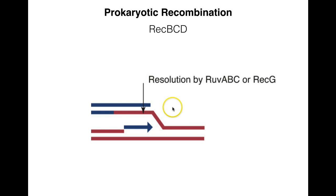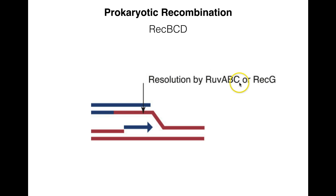The RUV proteins act on the Holliday junction. We discussed how the Holliday junction requires cleavage either in the north-south or east-west direction to be resolved. RUV-A and RUV-B work together as a heterodimer to recognize the Holliday junctions and facilitate branch migration, and then RUV-C comes in and does the actual cleavage. Without RUV-C, we would not have cleavage of the Holliday junction.